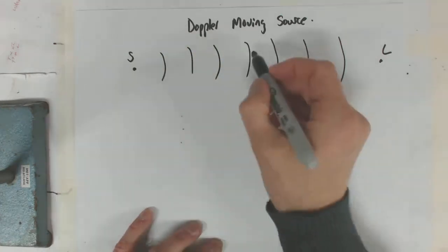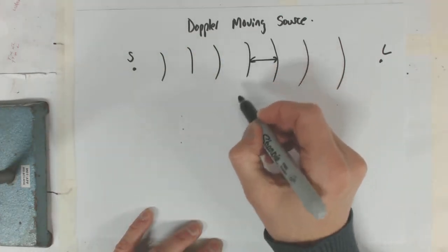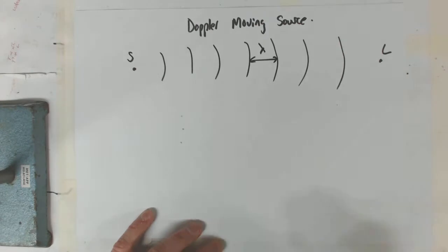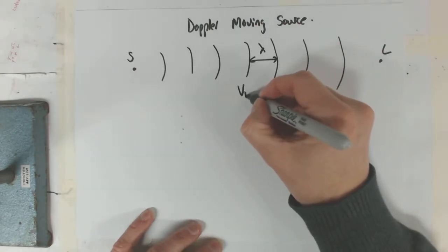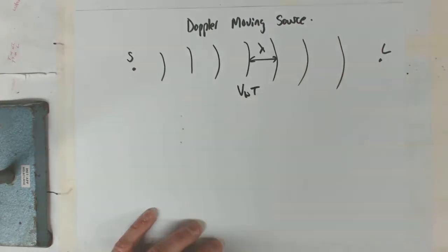We'll call the source S. Now we know the gap between two crests is the wavelength. Let's just remember that. That also is VW times T, where we've got the velocity of the wave times the period of the wave. That just comes from our normal formula.